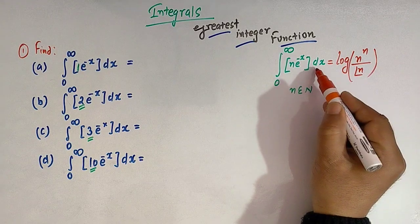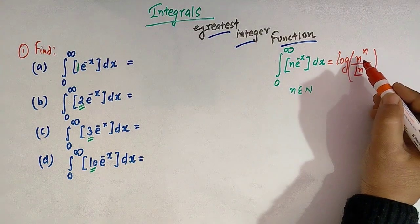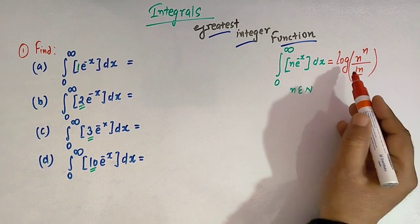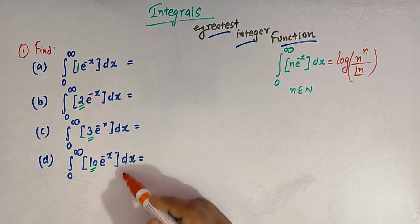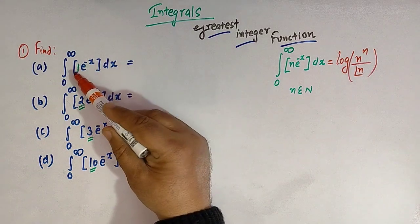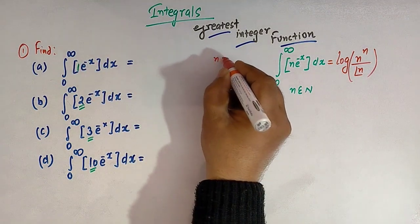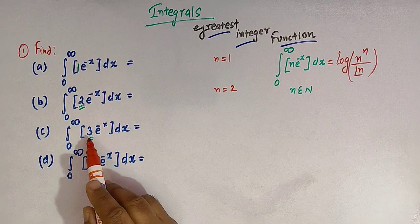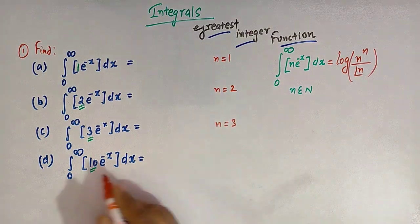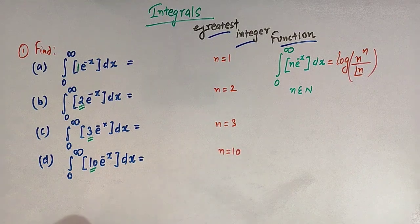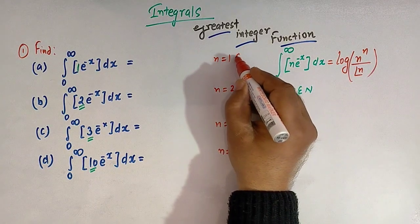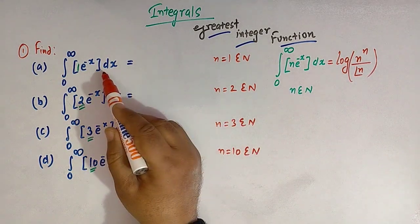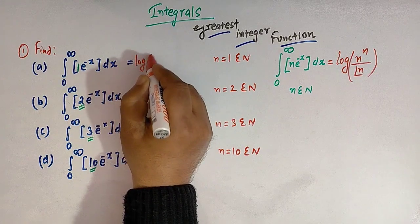Now with the help of this formula, we can find out the values of these four integrals. In the first integral, we have n equal to 1. In the second integral, we have n equal to 2. In the third integral, we have n equal to 3. And in the fourth integral, we have n equal to 10. So all these are natural numbers. The value of the integral is log of n raised to n divided by factorial of n.